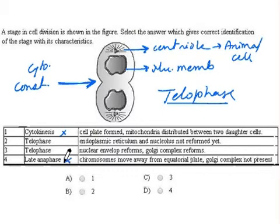So we have to choose out of these two—that is telophase. In the first case it says telophase stage is correct. But let us see what is given here. It says endoplasmic reticulum and nucleolus not reformed. Whereas in telophase, the cellular organelles and nuclear membrane are reformed.